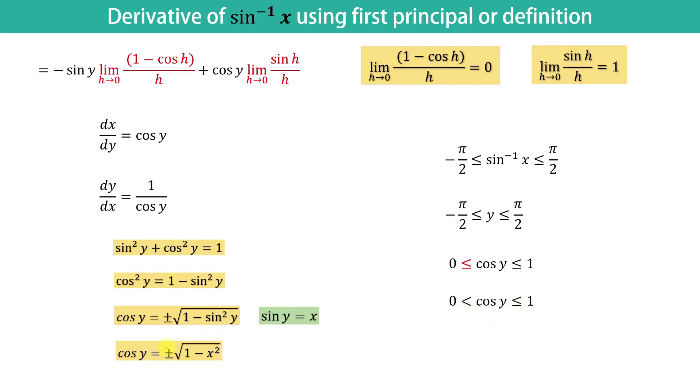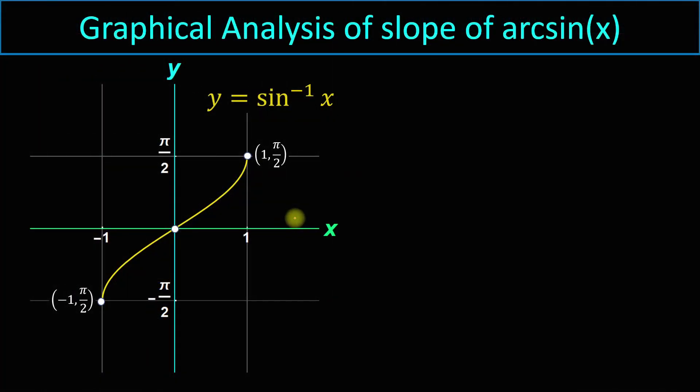Hence, we can remove the negative sign. This implies dy over dx is equal to 1 over the square root of 1 minus x squared. We can verify this fact by graphing sin inverse of x on Cartesian coordinates.